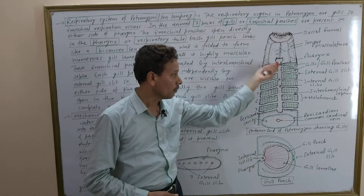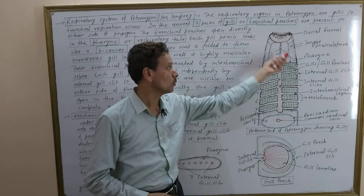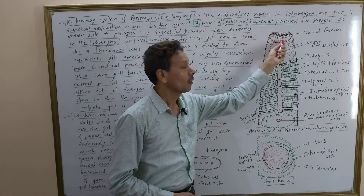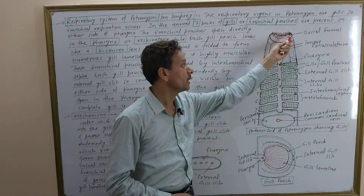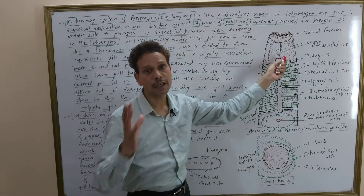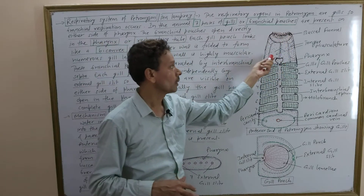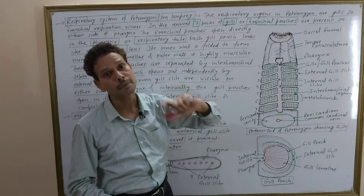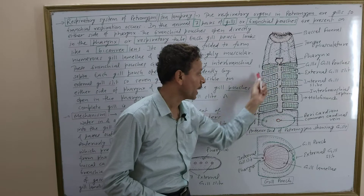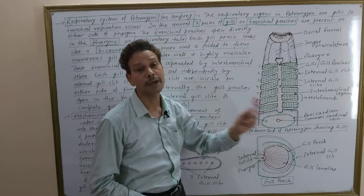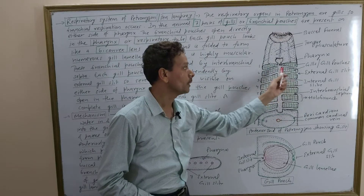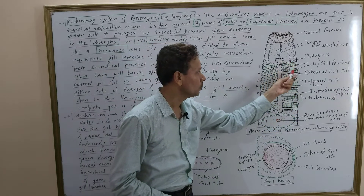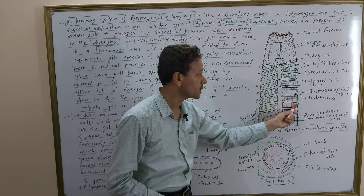Let's look at the anterior region of Petromyzon C Lamprey. In this anterior region, we see the buccal funnel with teeth, and then the powerful muscular tongue. In the center is the pharynx, and it is also the respiratory tube. Looking at the pharyngeal wall on both sides, these are gills — gill pouches. Counting them: one, two, three, four, five, six, seven gills — seven gill pouches are there.